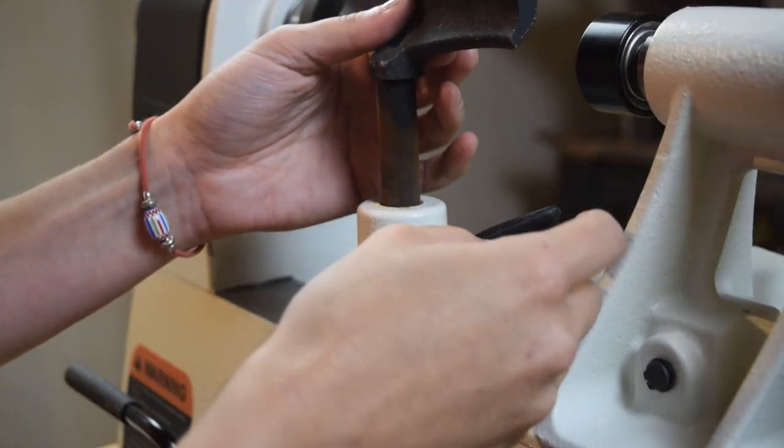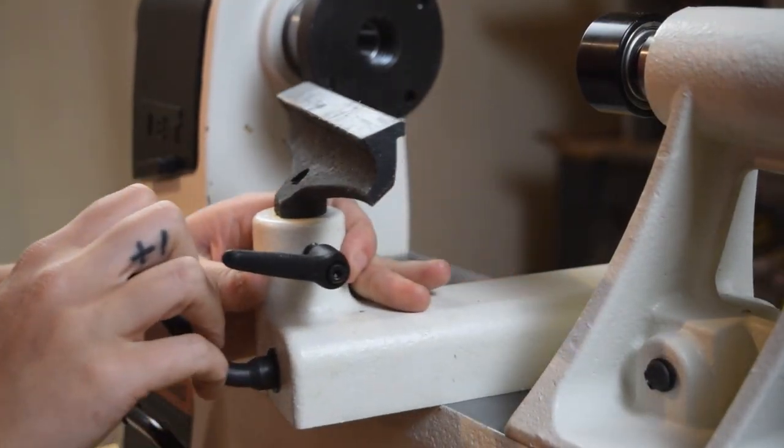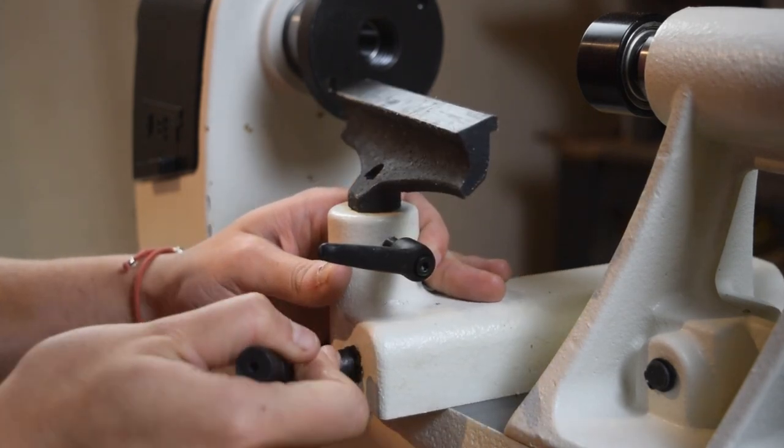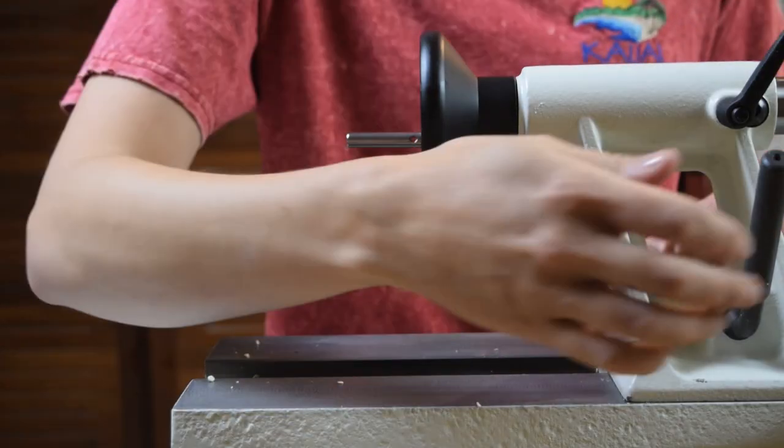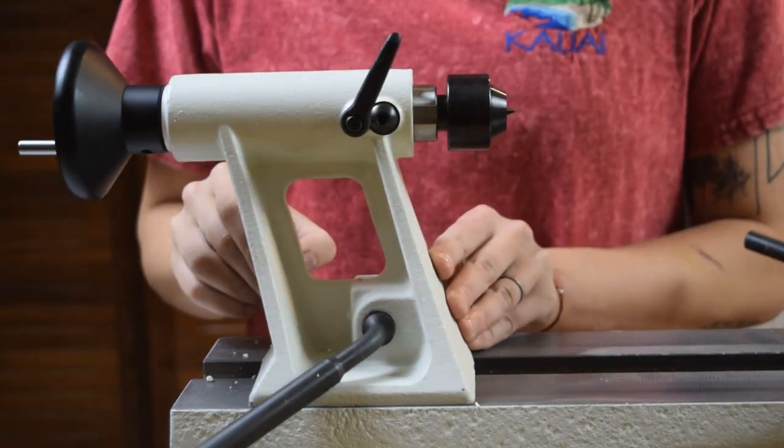After that, I put the tool rest into place on what I've seen called a banjo carriage, which is fun. Then, I got to know how the tailstock carriage worked. The lever and wheel system to set up the tailstock quill is super easy to figure out.